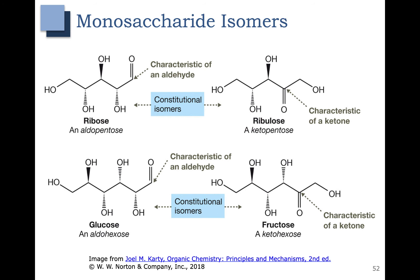In this slide, we see some examples of monosaccharide isomers. All of these are in their open chain form, and you can see that they have different connectivity. Ribose on the left has a molecular formula of C5H10O5. Ribose on the right has the same molecular formula but different connectivity. On the left we have an aldehyde, and on the right we have a ketone. They are both pentoses because they have 5 carbons, and pentose implies a sugar with 5 carbons. However, ribose is an aldopentose because it has an aldehyde, and ribulose is a ketopentose because it has a ketone.